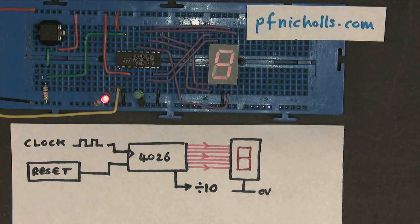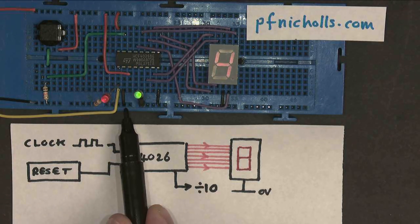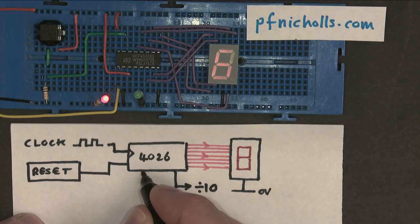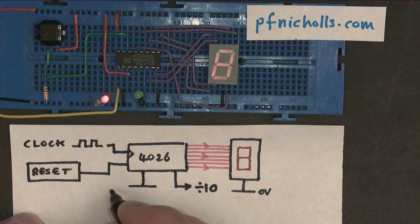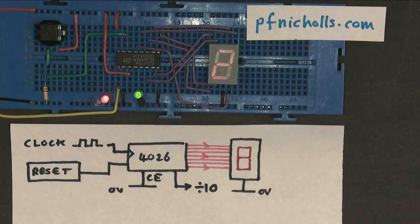There are two other inputs I want to talk about, or not inputs exactly, but pins. There's this pin here, which is pin 2. This is the clock enable, and it is currently connected to 0 volts. Let's see what it does.